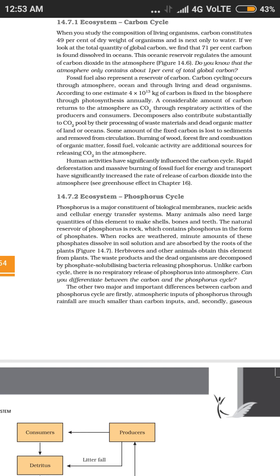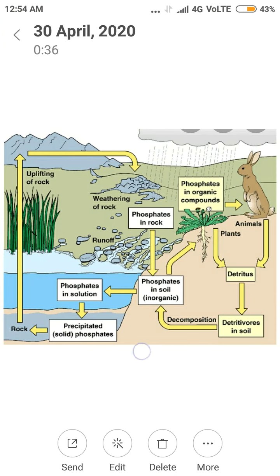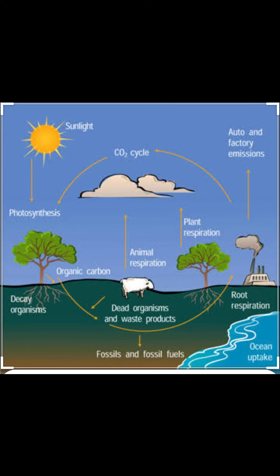In the carbon cycle: sunlight drives photosynthesis, organic compounds are formed, CO2 from the atmosphere enters plants. From plants it can go into animals, or waste will decompose and go into soil or oceans. Roots also respire. CO2 goes back from plants via respiration, and from animals that ate the plants. Factories also release CO2. Phosphorus and nitrogen cycles will be covered in the next video.